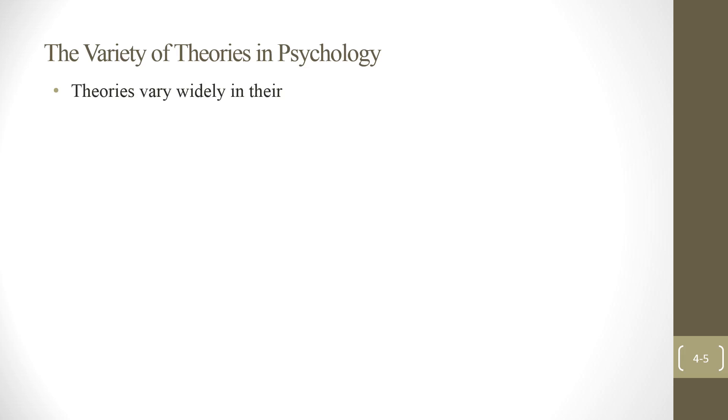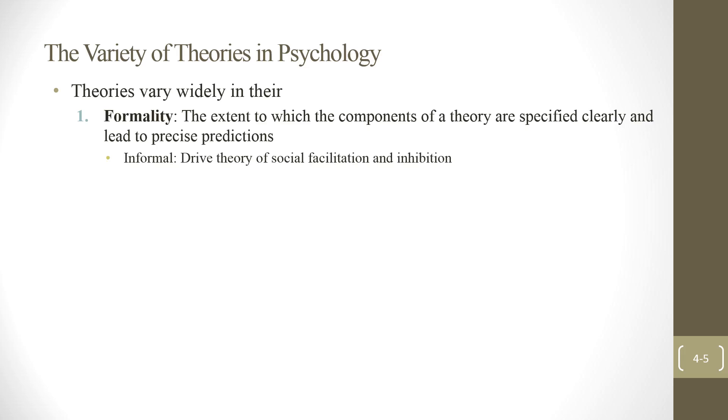Theories vary widely in their three dimensions. The first one is formality. So, some are really formal, and some are informal. So, for example, remember this, drive theory is quite informal. It's simple, easy to understand. So, drive theory of social facilitation inhibition. Easier to understand, but less precise. So, if you are performing some task, and you are already good at it, then if there's an audience, then your performance will be boosted, you will become even better. But, if you are not good at that task, all the audience observation will make you worse. It's really easy.